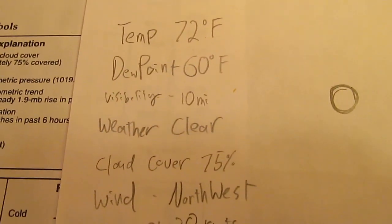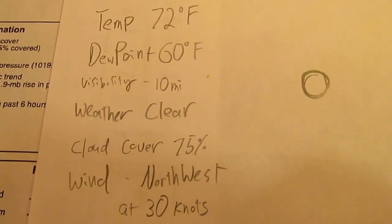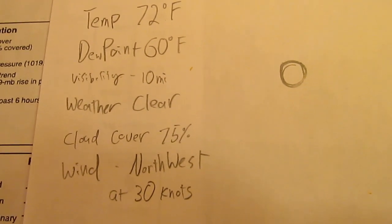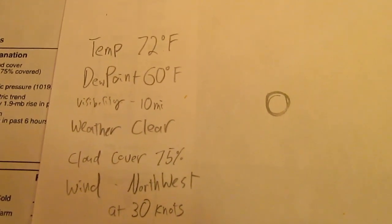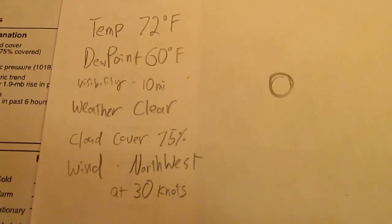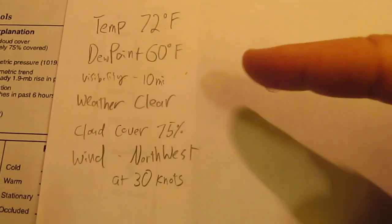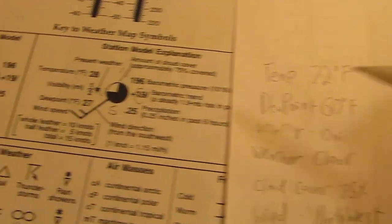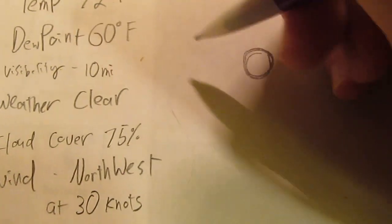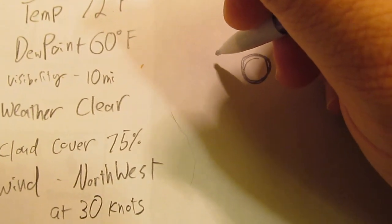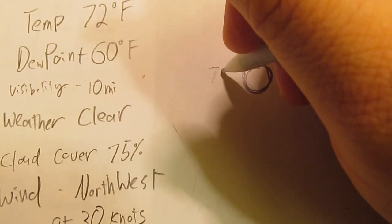So at some point, we're going to have to draw a weather station model, given the information we've got. So let's do that. So here's our weather data. We've got our temperature at dew point, cloud cover, wind data. So now we're going to put it on our little weather station right here. So temperature, temperature goes in the upper left. So our temperature here is 72 Fahrenheit. So I'm just going to, in the upper left here, right? 72.